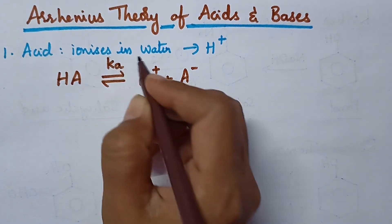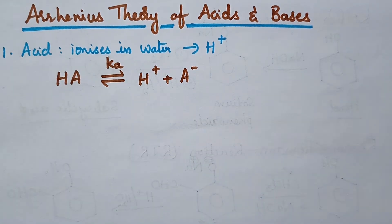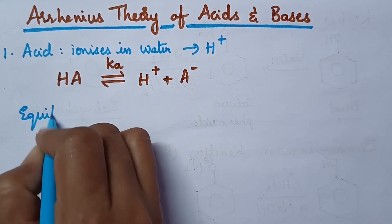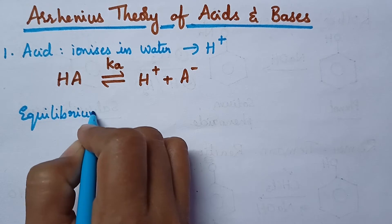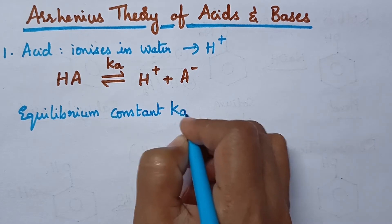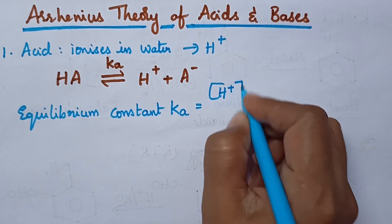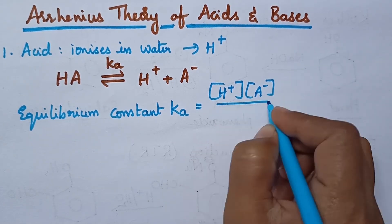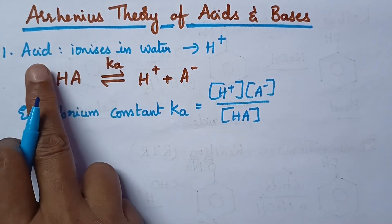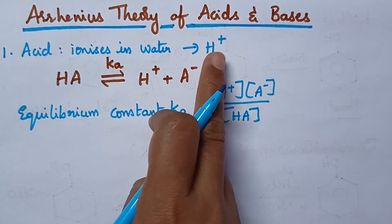Let Ka be the equilibrium constant. According to the law of mass action, the equilibrium constant Ka can be given as the product of molar concentration of products divided by reactants. According to Arrhenius, acid is a substance that ionizes in water and produces H+ ions.